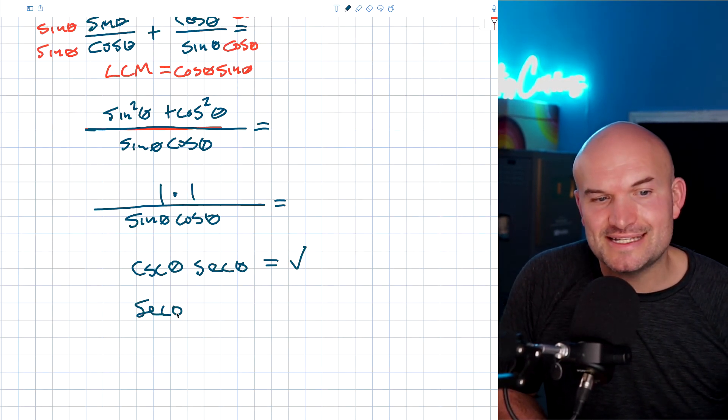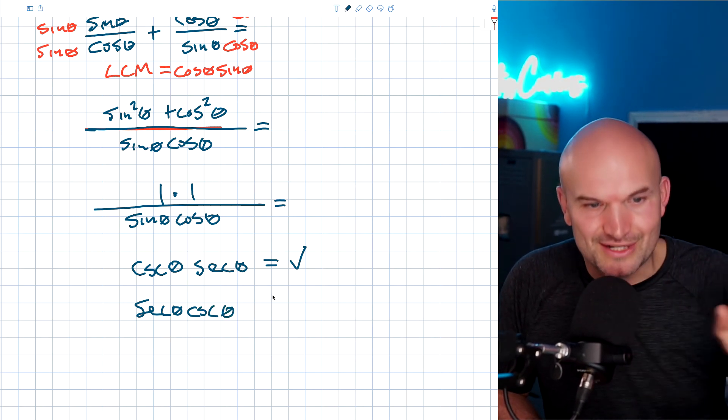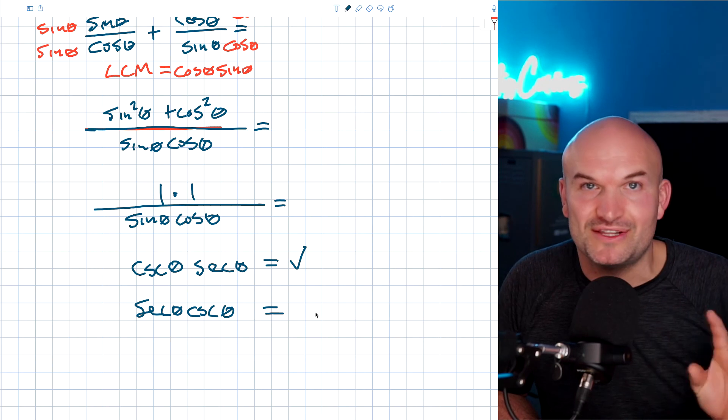So therefore I can rewrite this as secant of theta times cosecant of theta if you really want to, but you should just go ahead and expect that this is going to be perfectly fine.